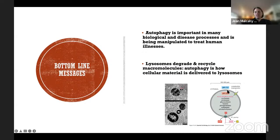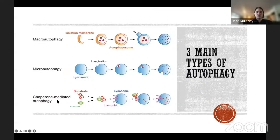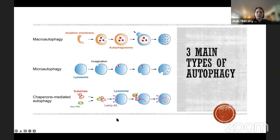There are three main types of autophagy. Macro autophagy is what most people think of when they say autophagy. Micro autophagy is where the lysosome itself picks up little pieces of things and degrades them. Chaperone mediated autophagy is associated with specific substrates you want to degrade — you're taking a very specific item, getting it to a lysosome so that specific thing is degraded and recycled.